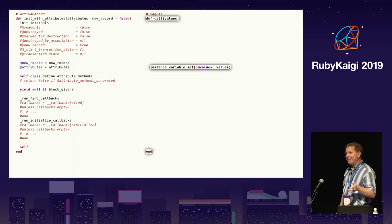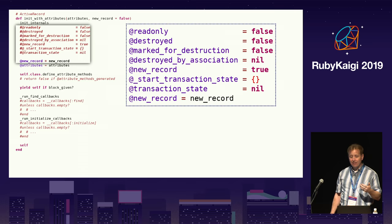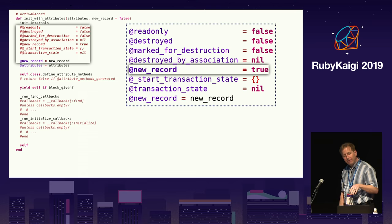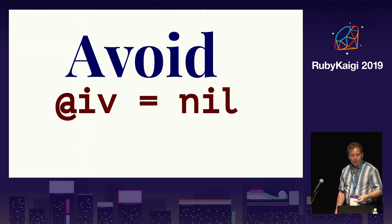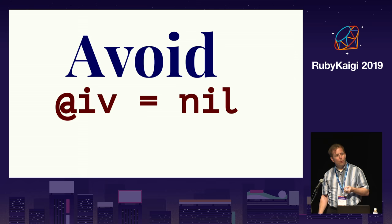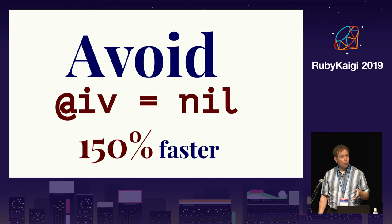So how is Sequel able to avoid executing most of this code? ActiveRecord starts by initializing all of these instance variables, mostly to nil or false. It sets new_record to true, but then sets it back to false because the method is usually only called with one argument. The most controversial optimization technique that both Sequel and Roda use is they both avoid initializing instance variables to nil or false. Assuming you have six instance variables, not initializing them to nil or false is about 150% faster. For both Sequel and Roda, this optimization improves performance by a few percentage points in real-world benchmarks.